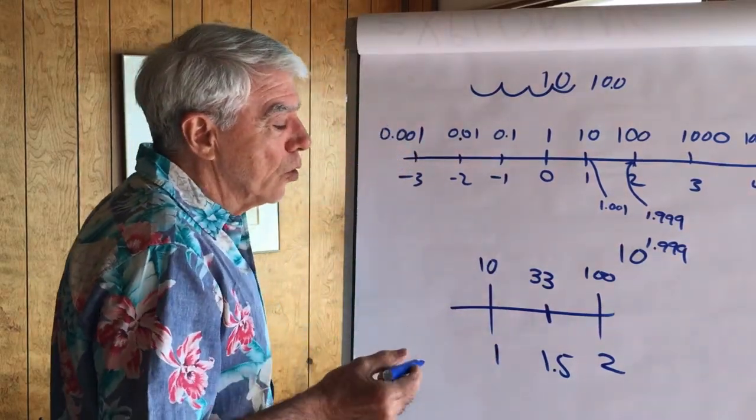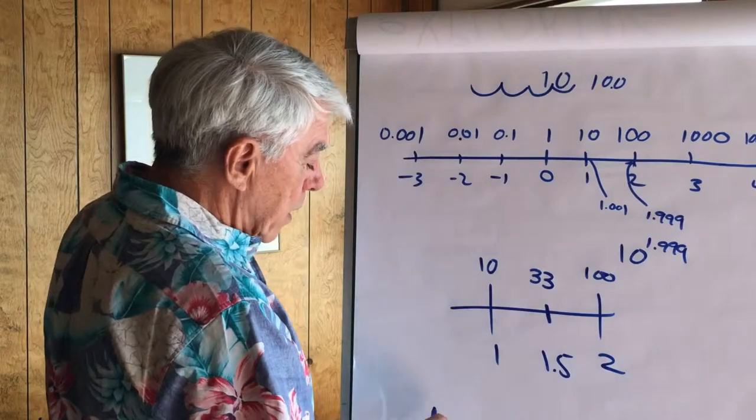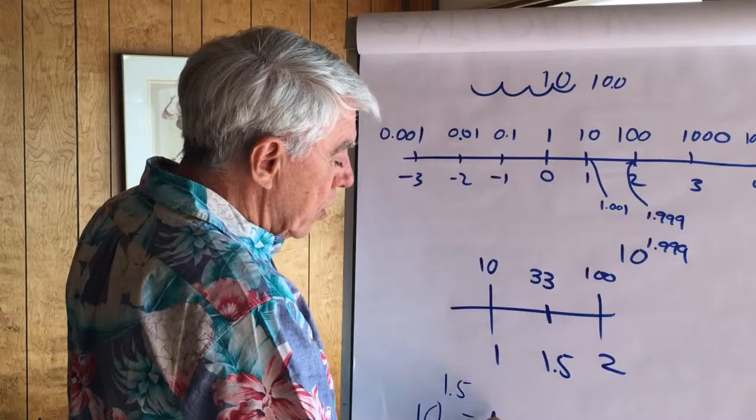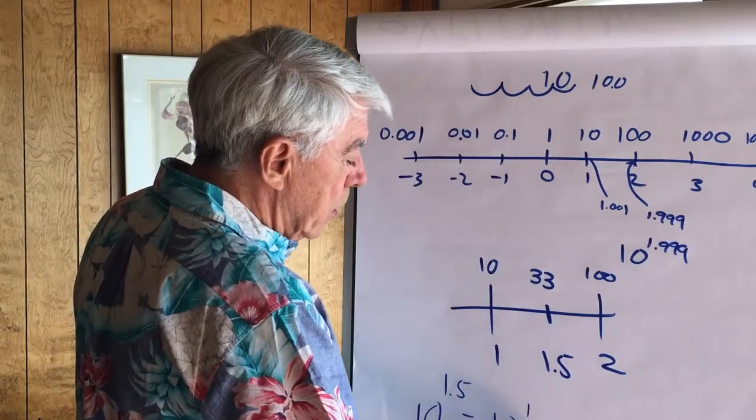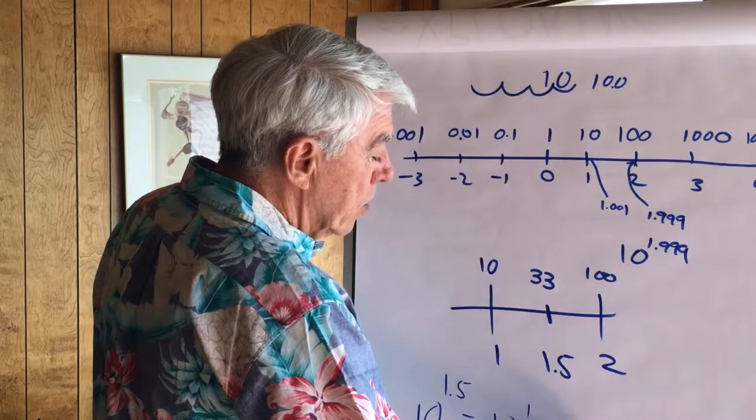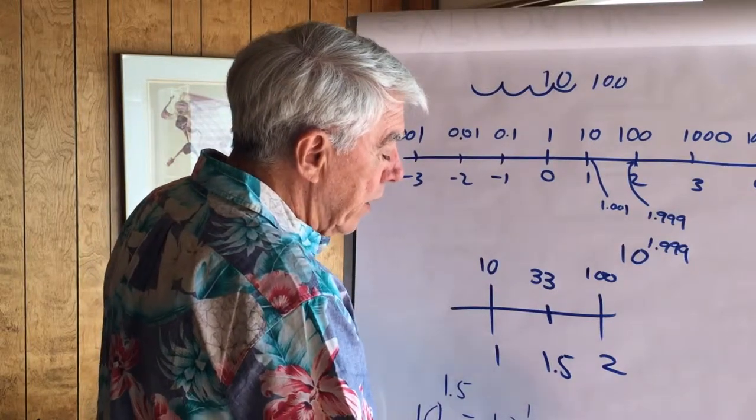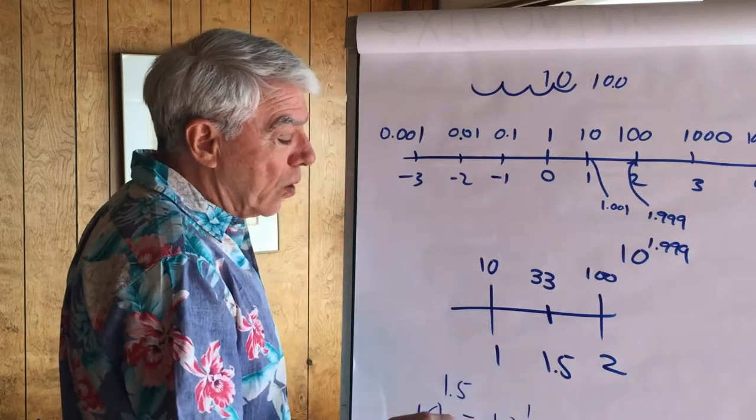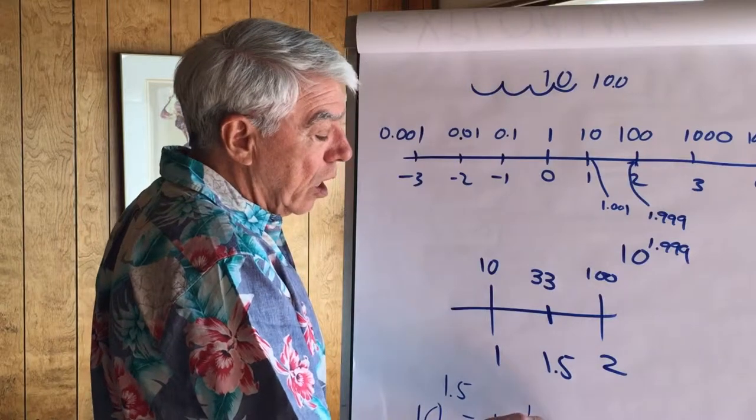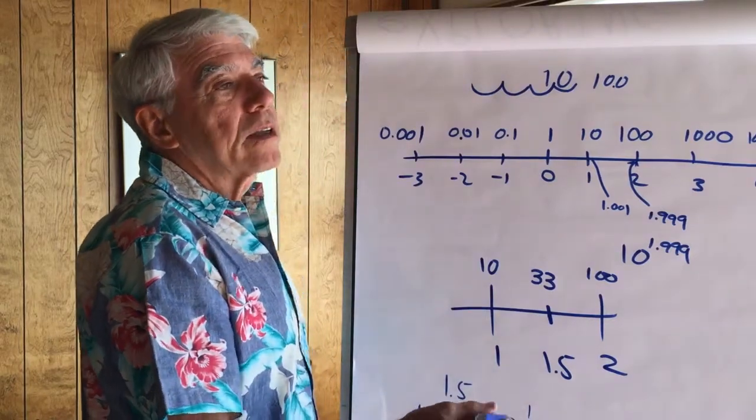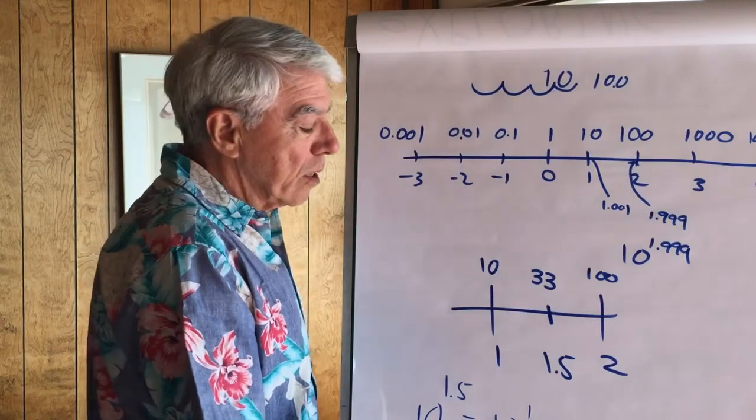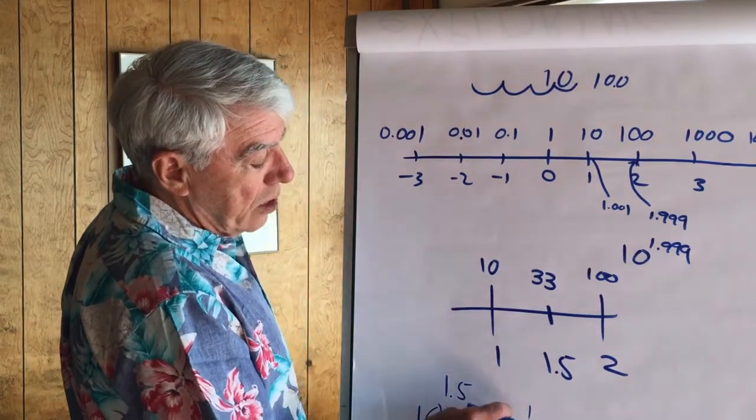If you saw the first lecture you know why. 10 to the 1.5 is equal to 10 to the 1st multiplied by 10 to the 0.5. Because when you multiply you add exponents. And 10 to the 0.5 is the square root of 10. 3 times 3 is 9. Roughly 3.2 times 3.2 would get us close to 10.